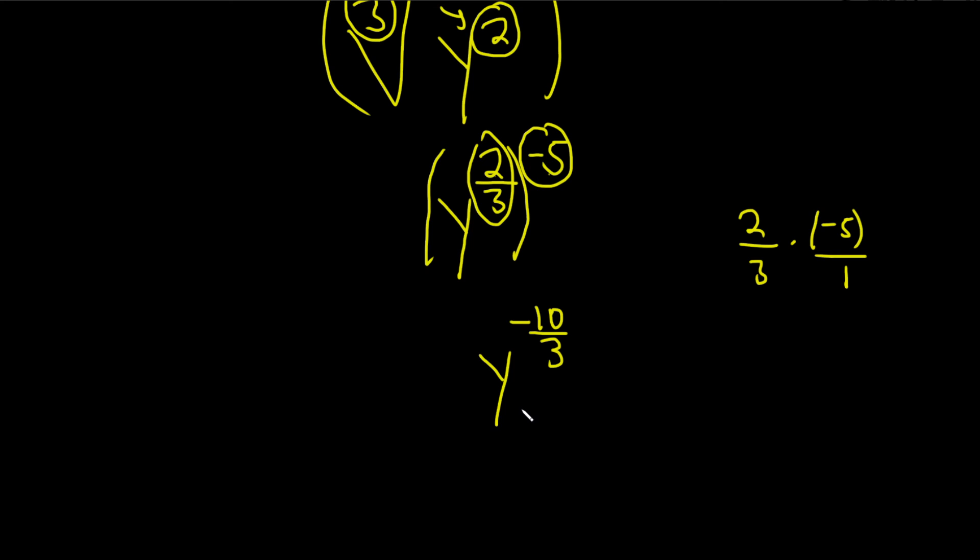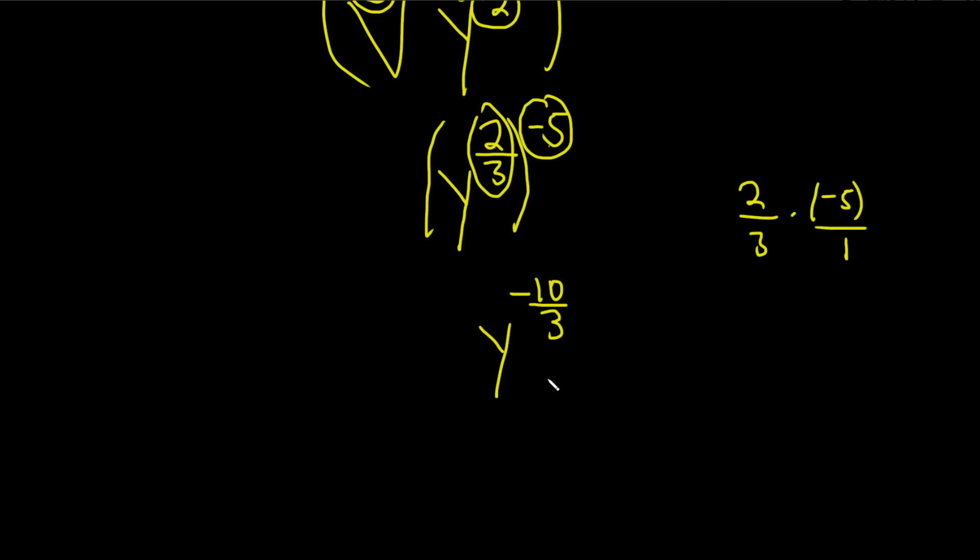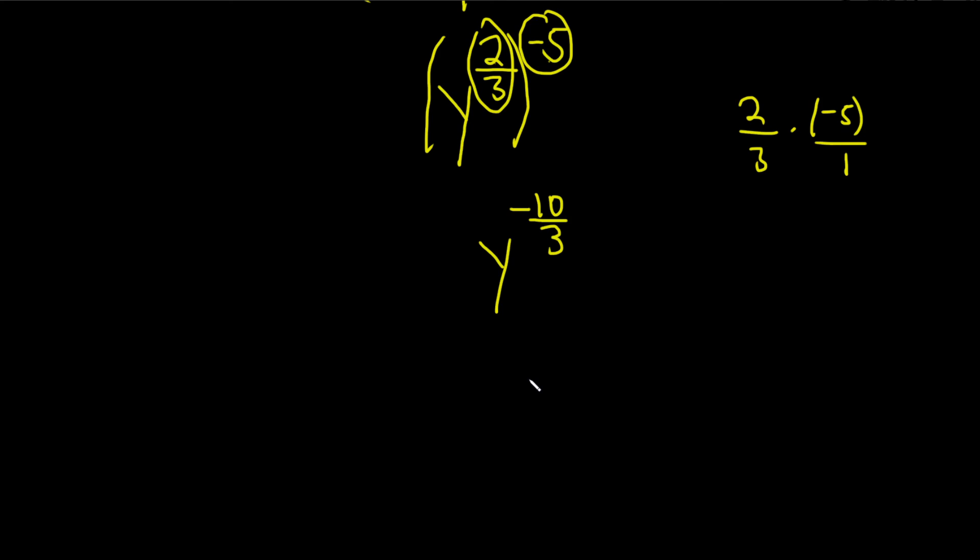And we're not quite there yet. The question wanted only positive rational exponents. So to make this exponent positive, we have to realize that this is all being divided by 1. And so in order to make the exponent positive, we'll take this whole piece and bring it downstairs.